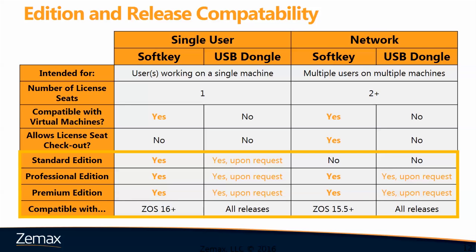Finally, we have a compatibility diagram. The standard edition of Optics Studio is only available as a single user type license. We do have the soft key available, and for all versions the USB dongle is available upon request. For the network license, we have soft keys available for both professional and premium editions, with the hard key also available upon request.